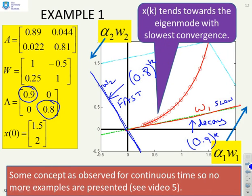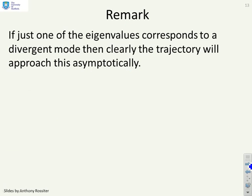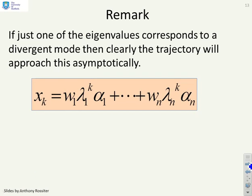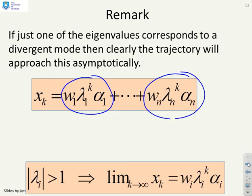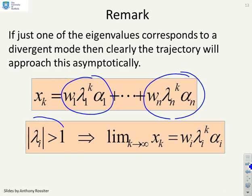If just one of the eigenvalues corresponds to a divergent mode, then clearly the trajectory will approach this asymptotically. And that will follow directly from this expression here. If you've got one of the λ's has got a modulus bigger than 1, then clearly the limit as k goes to infinity of that λ^k will be infinite and therefore that mode will dominate over all the others asymptotically.